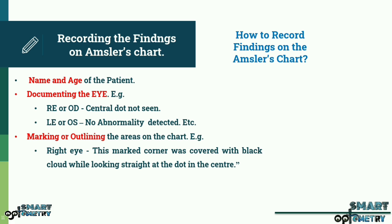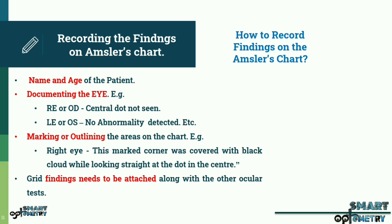For example, right eye: this marked corner was covered with a black cloud while looking straight at the dot in the center. The Amsler's grid findings recorded for each eye need to be attached along with the other ocular test findings for concluding the diagnosis.